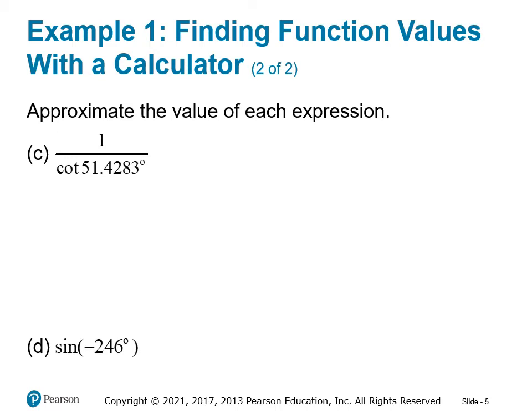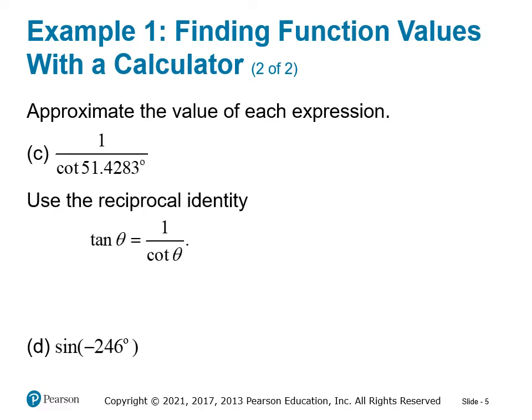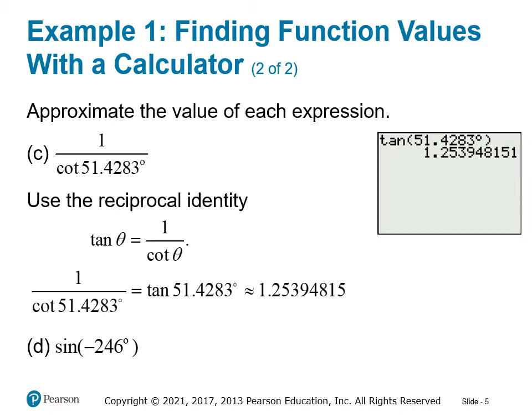Next: approximate one over cotangent of 51.4283 degrees. We know that tangent of theta equals one over cotangent of theta. So since we have the same angle, we simply plug in the tangent of this angle. Enter tangent, type 51.4283, then hit second apps and select number 1 for degrees.